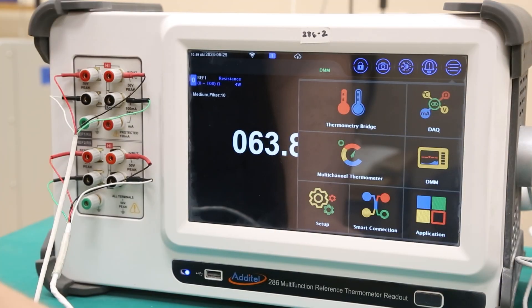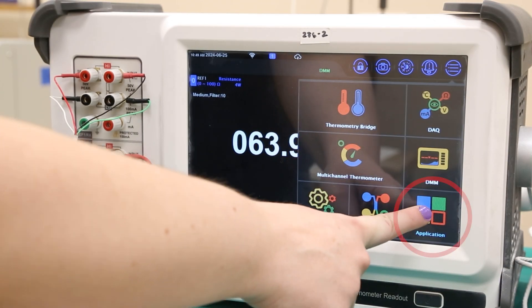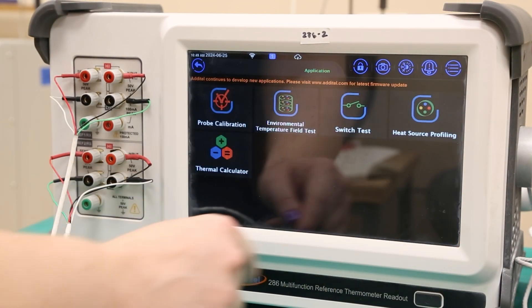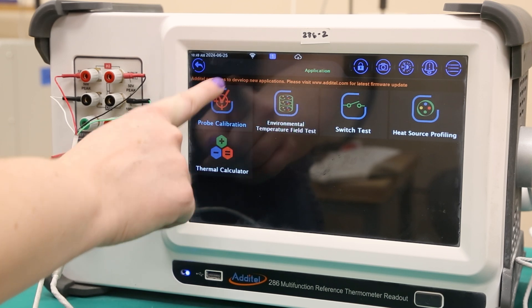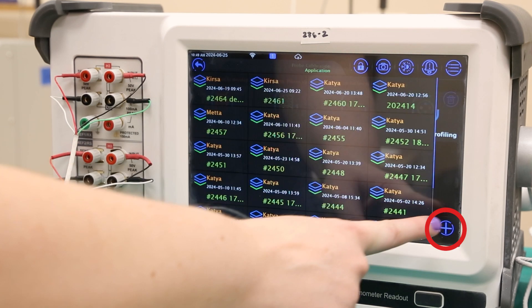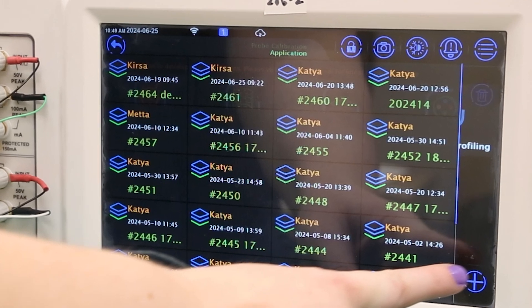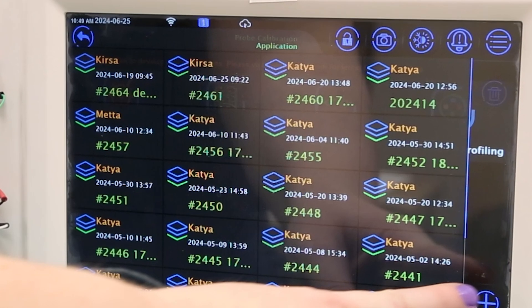Now to set up the calibration test. From the 286 menu screen, select the application button, then probe calibration. Select the plus icon in the bottom right corner to add a new test. These tests are saved to the device and can be revisited at any point in the future.